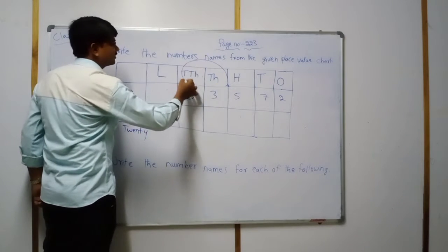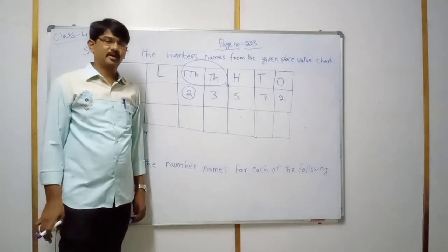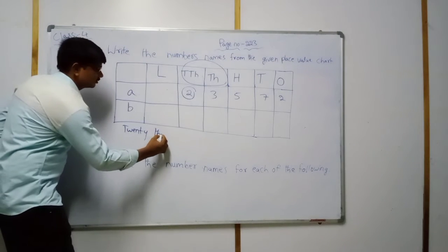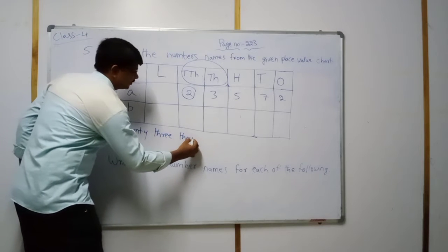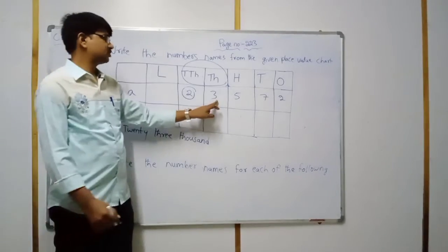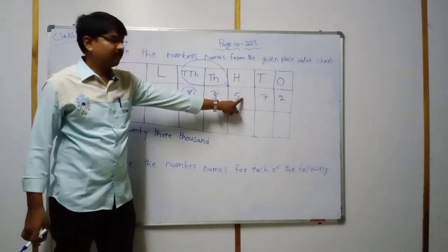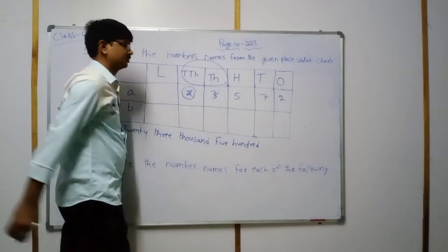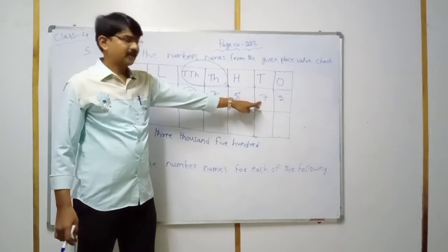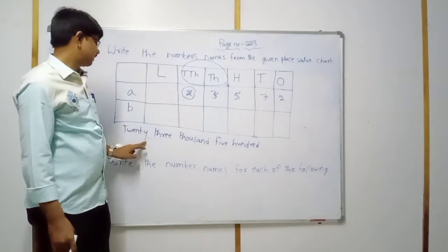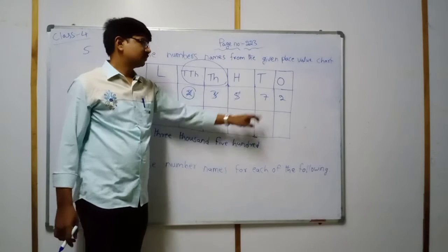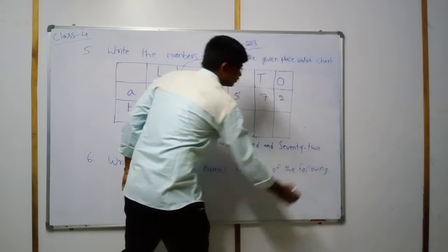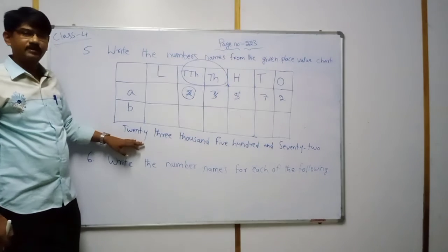These two places — ten thousands and thousands — belong to one period, which is the thousands period. So we write the two place values combinedly: 23,000. Then 500. Then 72. The number 23,572 — this is the process to write number names.